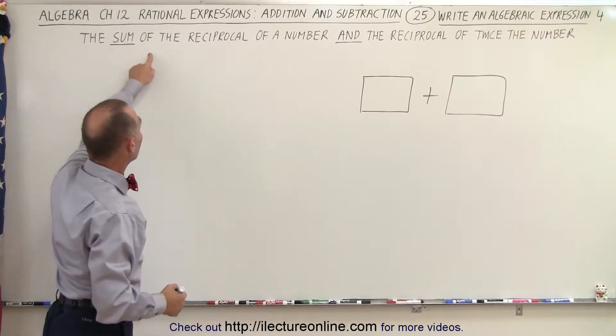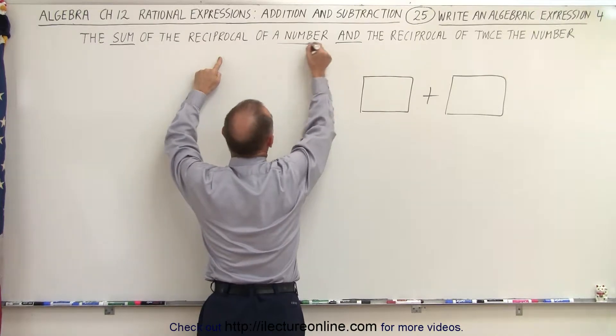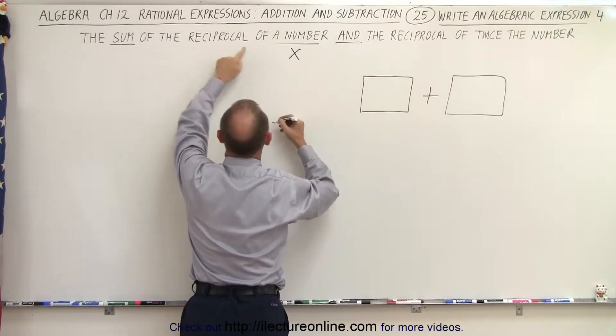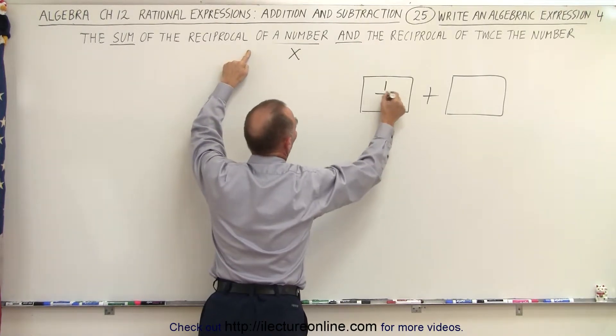First of all, the sum of the reciprocal of a number. So the number, let's call it x. And the reciprocal of the number is 1 over x. So we write 1 over x.